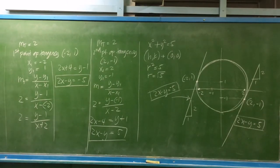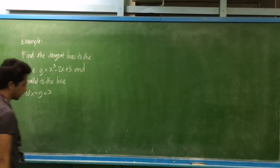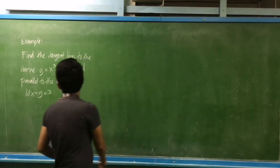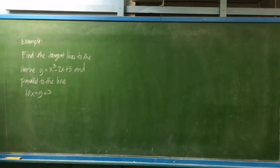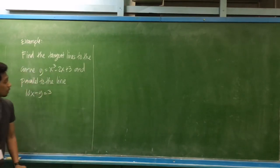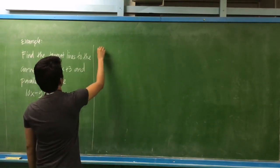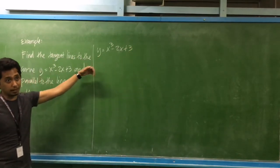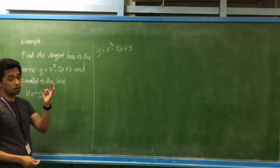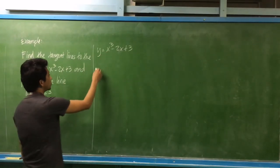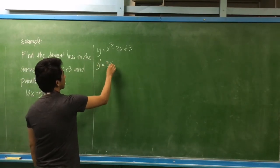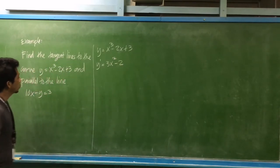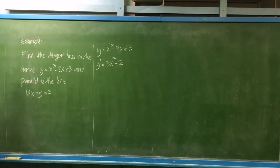Let's try another example. Find the tangent lines to the curve y equals x cubed minus 2x plus 3. We need to determine the slope equation from the given curve. Taking the first derivative: y prime is equal to 3x squared minus 2.